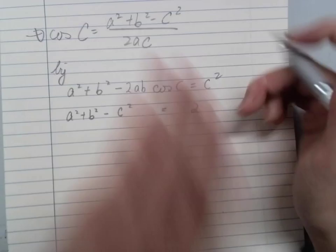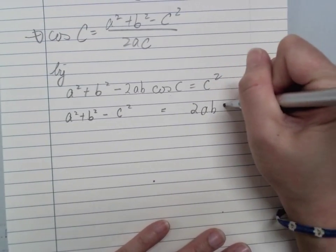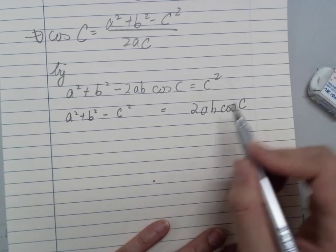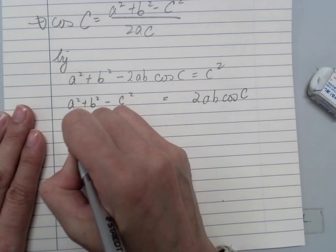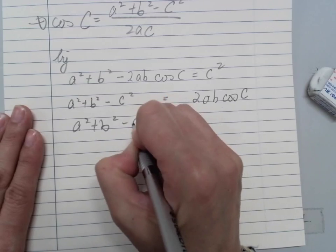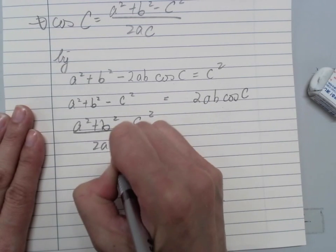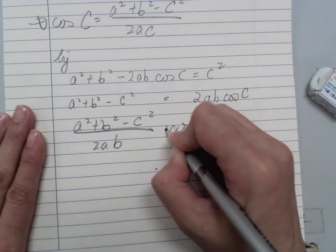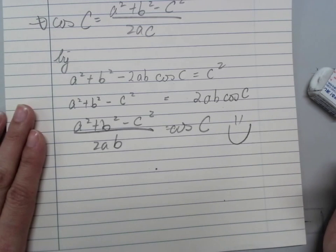This is multiplied. So dividing both sides, I have (A² + B² - C²) / 2AB = cos C. And I should be happy if I were you.